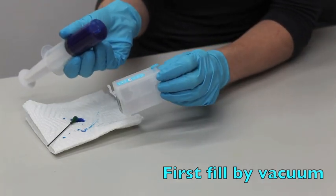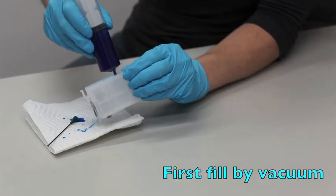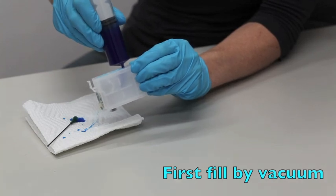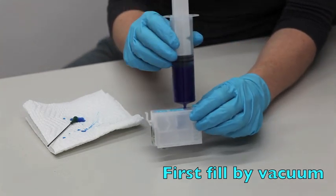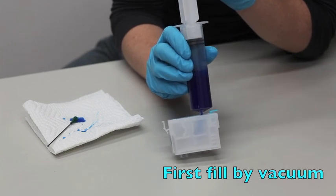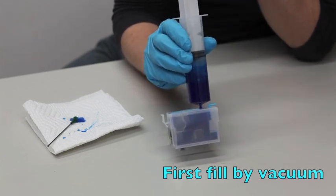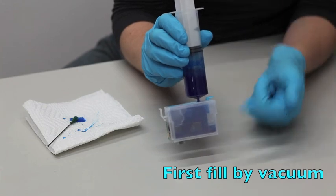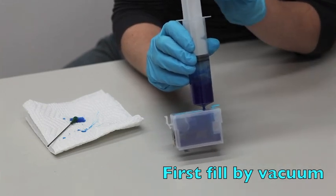Then insert the tip of the syringe into the fill hole plug of the cartridge so it's nice and snug. And I'm going to pull up on the syringe plunger and release it, which creates a vacuum in the cartridge, and that draws the ink inside.